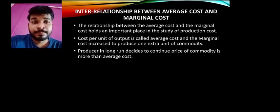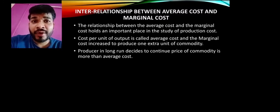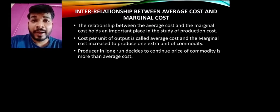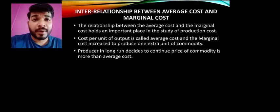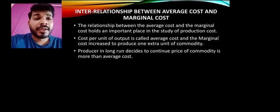Now, what happens when your product becomes popular and there is demand for it? The price rises. A producer thinks: when my product becomes more popular, I will sell it at a higher price — that is, above my average cost. So for the long run, a producer decides to continue and keeps the price of the commodity more than the average cost.